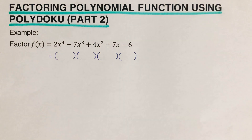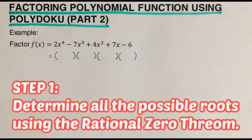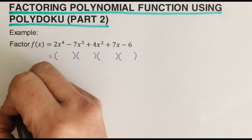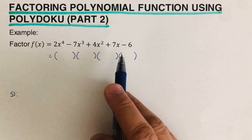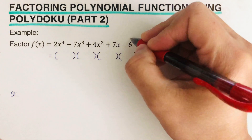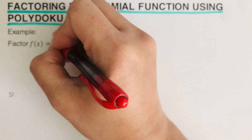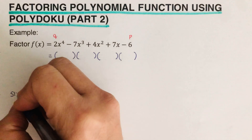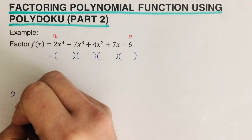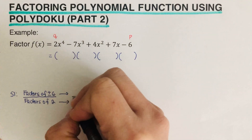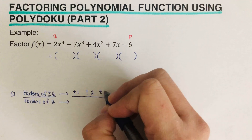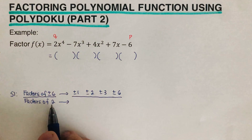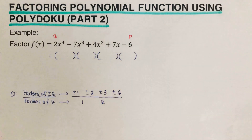What we're doing in this video is figuring out what these four factors are such that if we multiply them, it will come out to this polynomial function. Please remember there are some steps to follow. The first step is to determine all of the possible roots using the rational zero theorem. There is another video on how to do this, and I will put the link in the description box below. Looking at this using the rational zero theorem, this is our p and this is our q, so we go ahead and determine the factors of p and q.